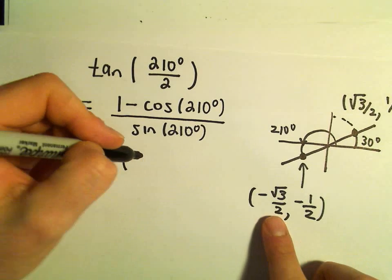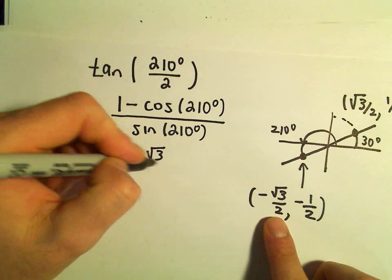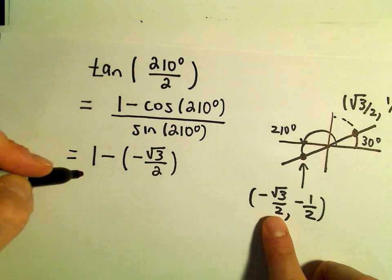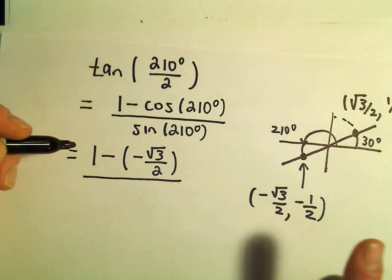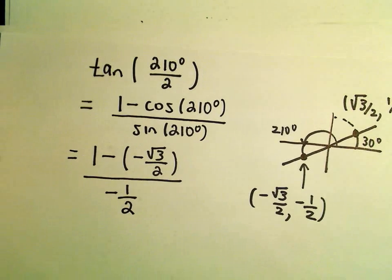We'll get 1 minus cosine. Well, cosine would be negative root 3 over 2. Sine is going to be the value of the y-coordinate, which will simply be negative 1 half.